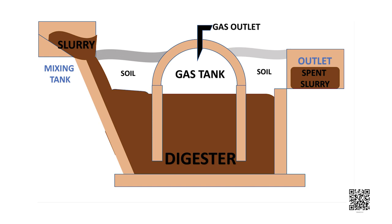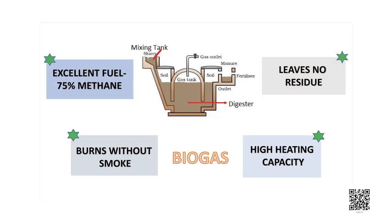Anaerobic microorganisms, that do not require oxygen, decompose or break down the complex compounds of the cow dung slurry. It takes a few days for the decomposition process to be complete. Gases like methane, carbon dioxide, hydrogen, and hydrogen sulfide are released. The biogas is stored in a gas tank above the digester, from which it is drawn through pipes for use.